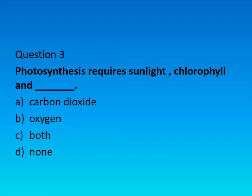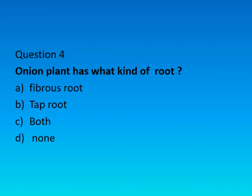Question number three: photosynthesis requires sunlight, chlorophyll and dash. The right answer is option A: carbon dioxide. Question number four: onion plant has what kind of root?